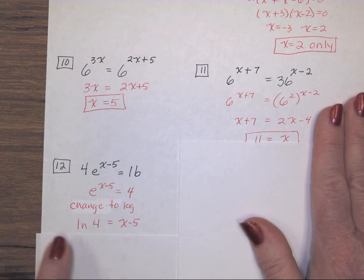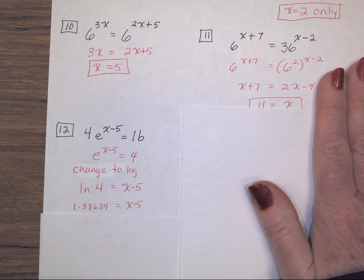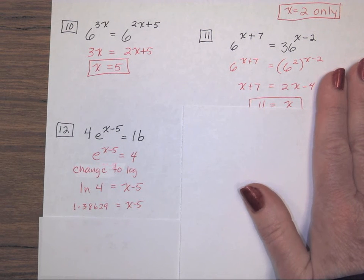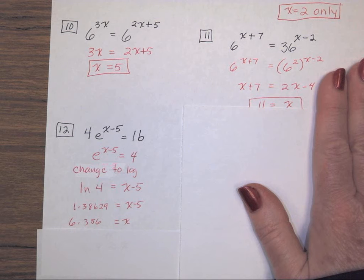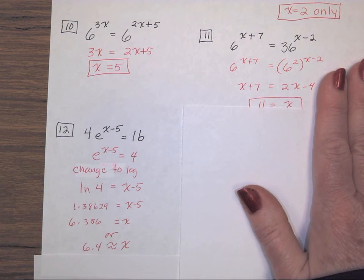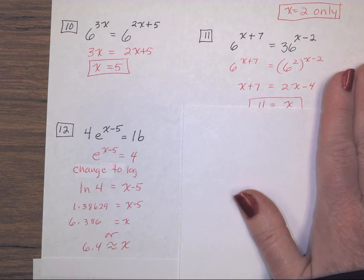So, if you use your calculator and find the natural log of 4, it is approximately, and I wrote out several digits, 1.38629. And then, I need to add 5 to get x by itself. And then, I get my approximate final answer. If you wanted to round it, if they told you to round it to the 10th place, or 100th place, or whatever, you could do so.